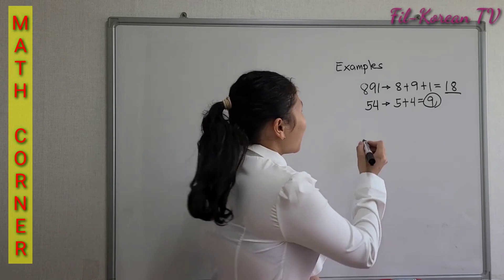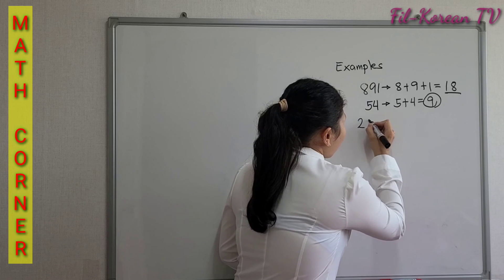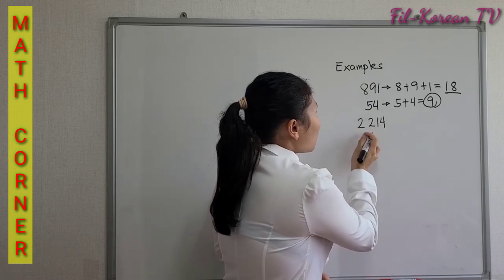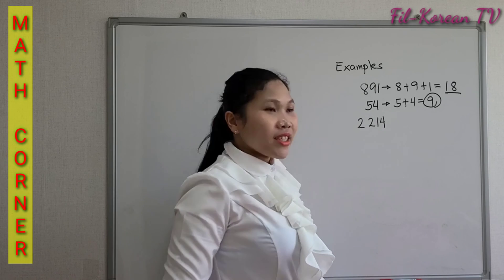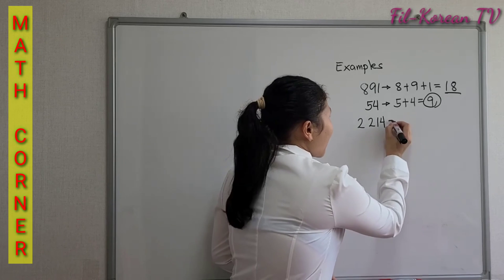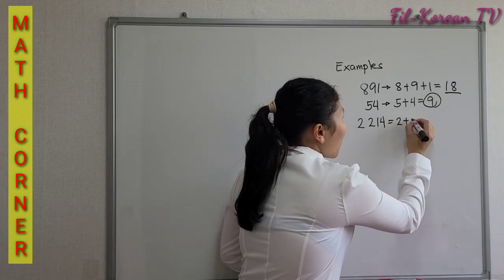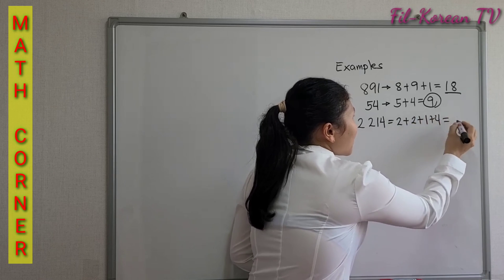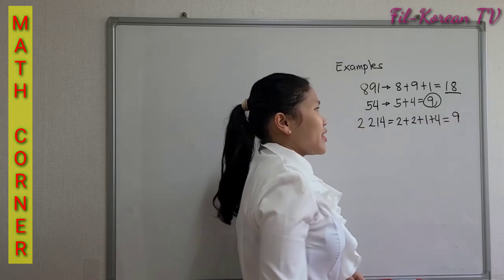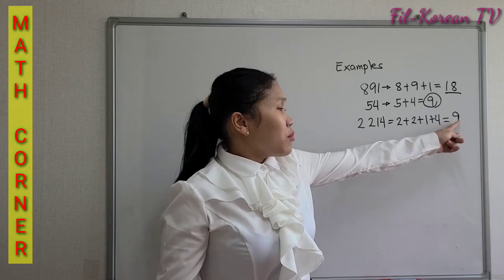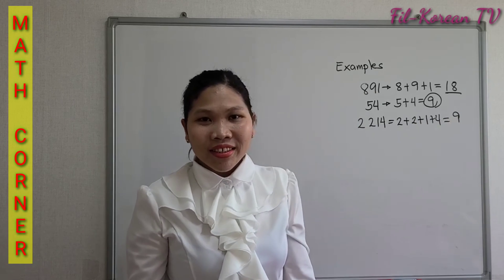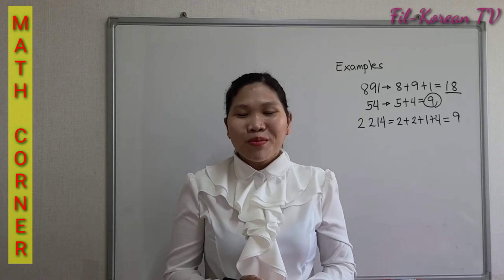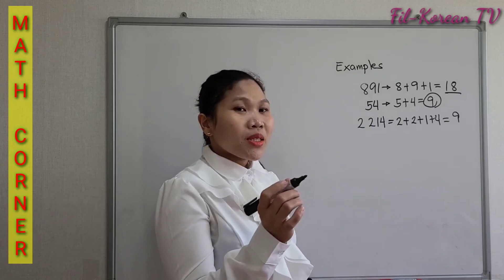Next example: 2,214. Just add the digits — 2 plus 2 plus 1 plus 4 — the answer is 9. 9 is a multiple of 9, therefore 2,214 is divisible by 9.